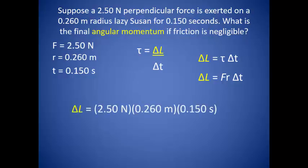Plugging in our values, we get 9.75 times 10 to the negative 2nd kilograms times meters squared per second. Keep in mind that we found a change in momentum, but the problem asks for the final momentum. Since the table started at rest, the change in momentum and final momentum are equal to each other.